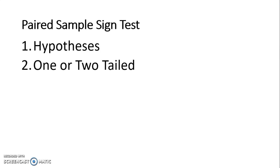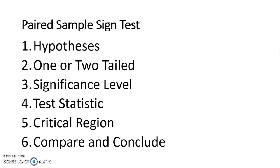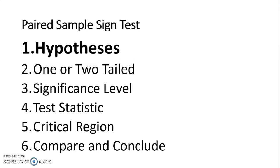As with all hypothesis tests, we need to follow the six steps. Write out our hypotheses, state if it is one or two tailed and the significance level, calculate the test statistic, find the critical region and compare them and conclude. So let's start with our hypotheses.